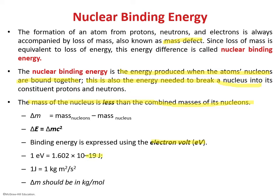Joules is a common unit of energy, and a conversion factor relates joules to electron volts. One joule equals one kilogram·meter²·second⁻². An important requirement when using ΔE = Δm·c² is that Δm must always be in kilograms — or kilograms per mole — not grams. You cannot use grams in this equation.